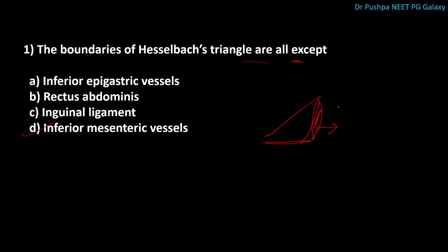The rectus sheath or rectus abdominis muscle forms the medial boundary. Laterally it is formed by the inferior epigastric vessels. Below it is formed by the inguinal ligament. The importance of Hesselbach's triangle is that direct inguinal hernia comes through this defect. This area is weak because it contains only two layers: transversalis fascia and external oblique aponeurosis.